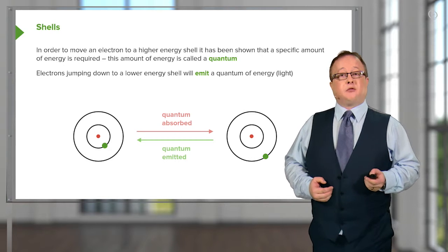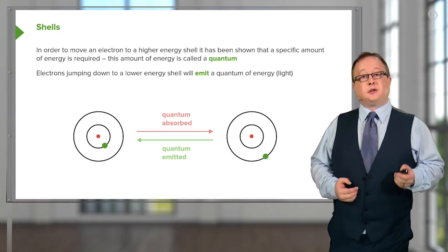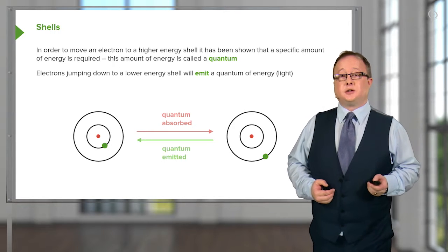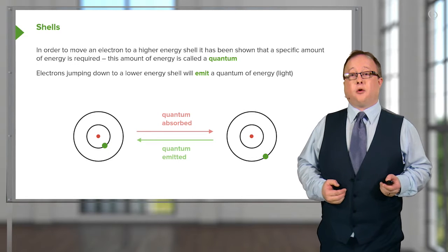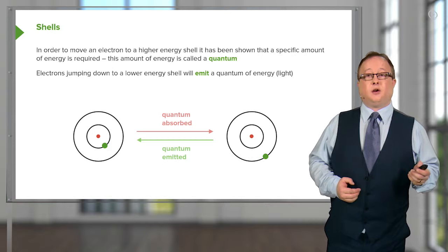When an electron moves back from its outer shell, shown here with the green line, back to that electron which is nearest the nucleus, we see a quantum of energy emitted, usually as a photon of light.